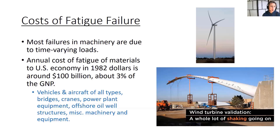Fatigue loading appears in vehicles and aircraft of all types, fridges, cranes, power plant equipment, offshore oil well structures, miscellaneous machinery, and anything on a production line. One early internship was at the National Wind Technology Center in Colorado, where huge wind turbine blades had weights attached to make them fluctuate — literally testing blades to fatigue failure.